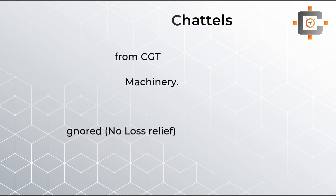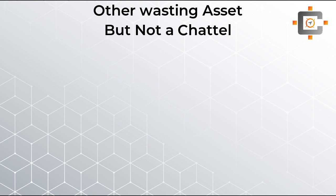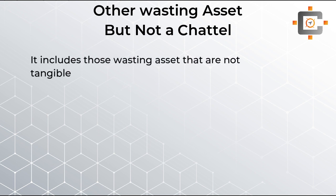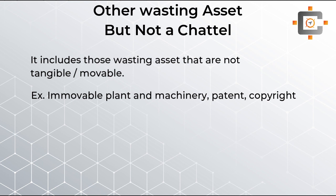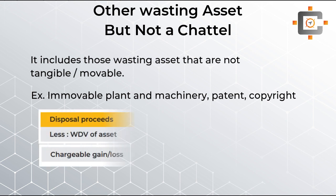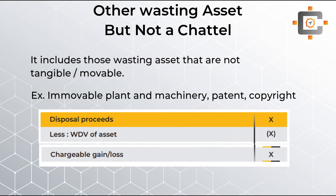Next is other wasting assets that are not chattels — assets that are either not tangible or not movable, so they can't be classed as chattels. For these, the CGT variation is simple: in the pro forma, instead of deducting the original cost, you deduct the written-down value (WDV) of the asset.